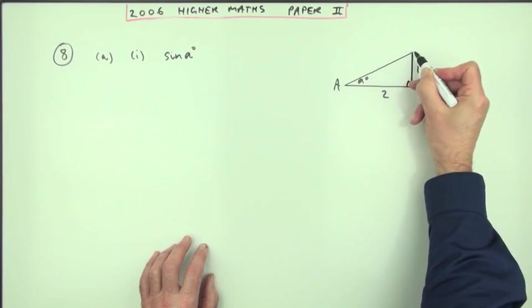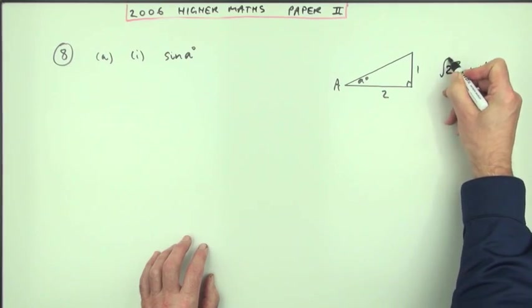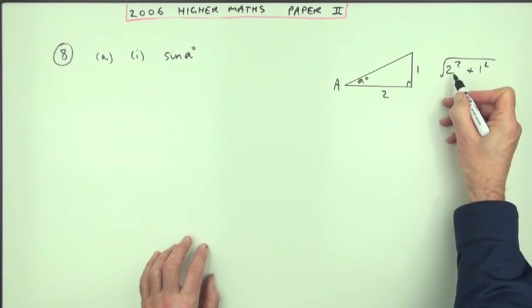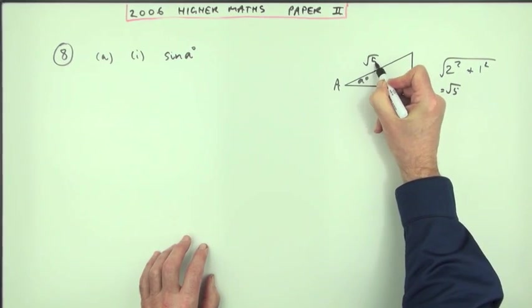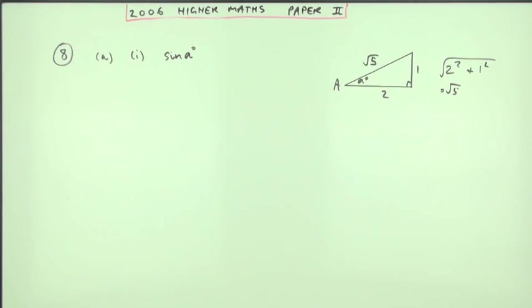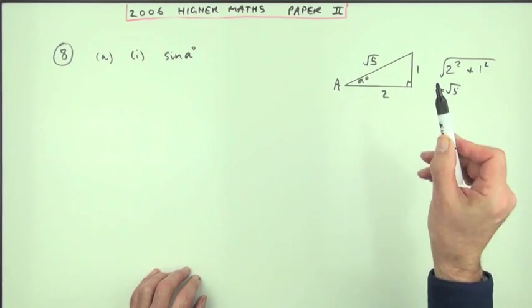You need to use Pythagoras to work out the hypotenuse which would be two squared plus one squared and then take the square root. So that's four and one's five so that means it's root five. The hypotenuse is root five but that's not the first mark yet though if you put root three there you will definitely have lost a mark.